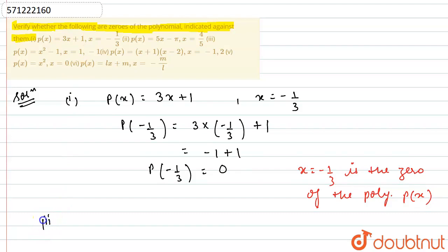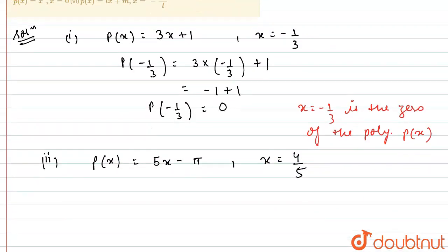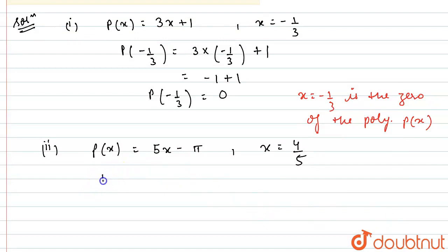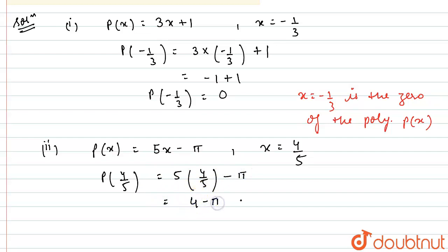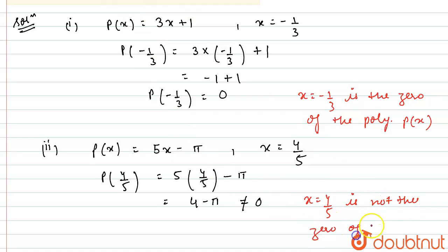This is how we check for each part. In the second part, we are given polynomial p(x) = 5x - π and I need to check this at x = 4/5. I will find p(4/5), which equals 5 multiplied by 4/5 minus π. The 5s cancel, leaving 4 - π, which is obviously not equal to 0. Hence, x = 4/5 is not the zero of the polynomial.